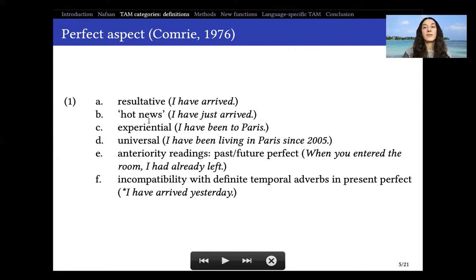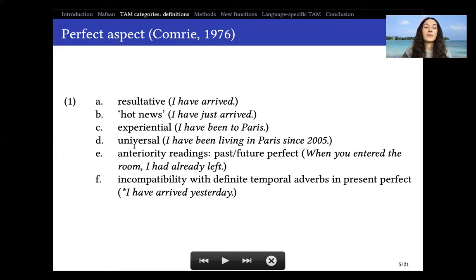Then we have the 'hot news' function — something like 'I have just arrived,' meaning just immediately before. Then the experiential use: 'I have been to Paris,' meaning at some point in my life up until now. Then the universal function: 'I have been living in Paris since 2005,' which is a continuous state that started in the past but continues at present. And then we have the anteriority readings — in English, past and future perfect. For example, 'when you entered the room, I had already left': I had already left is anterior to the reference time when you entered the room.